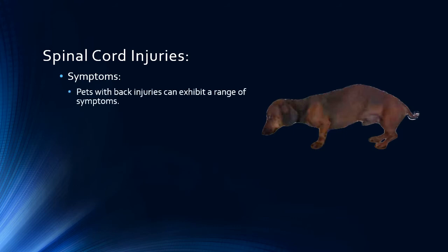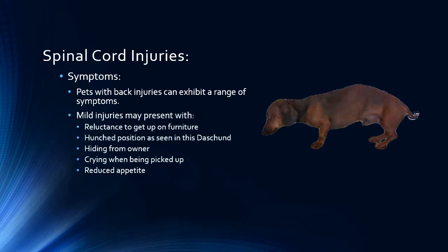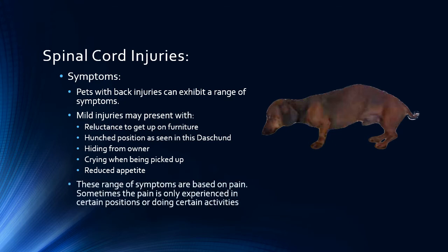Back injuries present with a variety of symptoms. Frequently, owners have no idea that their pet has sustained a spinal cord injury. They simply report things like: my dog is not acting right, he's hiding, doesn't want to eat, won't get up on the couch, wants me to carry him up the stairs. Owners frequently report that the pet is crying out when being touched or picked up — this is because lifting the dog bends the spine, which may cause sudden pain in a pet with a bulging disc. Often the symptoms are intermittent and may be seen only in certain circumstances, such as when the pet has to move in a certain fashion.